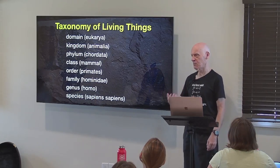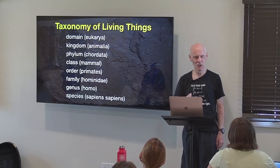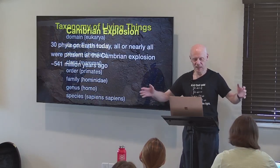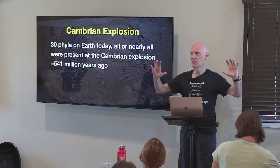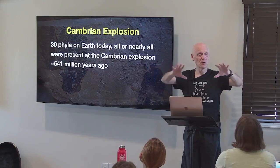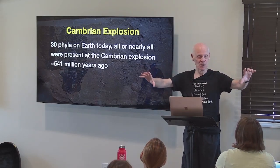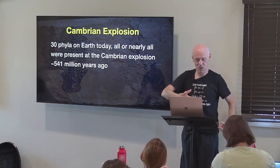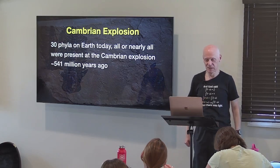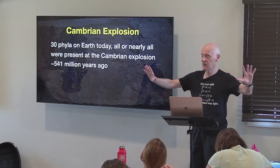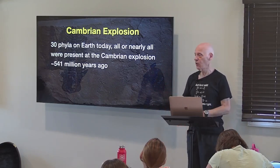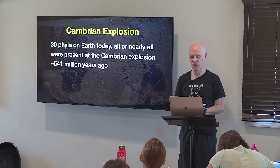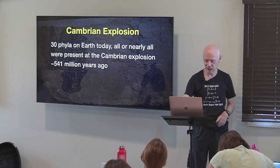The Cambrian explosion ranks as the greatest challenge to a naturalistic interpretation of life. Today we look at the animal kingdom and there are 30 different phyla. The term 'phylum' refers to a basic body plan — our basic body plan, the chordates, is a long neural cord running down our body. There are 30 different basic body plans, and all — or nearly all — were present at the Cambrian explosion 541 million years ago.